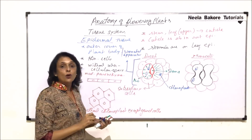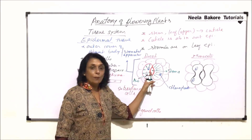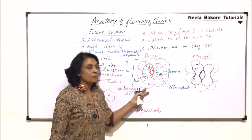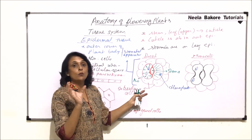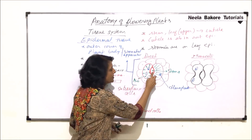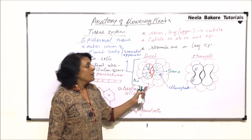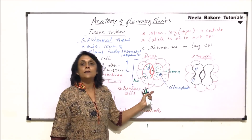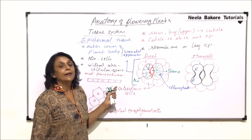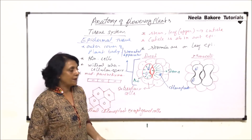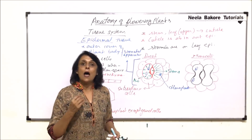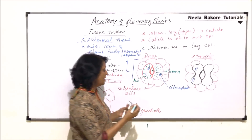Only the opening is called stoma. The two guard cells together with the opening are referred to as stomata. But if we include all the components — that is, the subsidiary cells also — then it is called the stomatal apparatus.